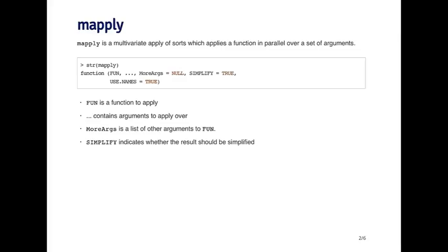mapply is a loop function that is a multivariate version of the lapply and sapply functions that you've seen previously. The idea is that it applies a function in parallel over a set of different arguments. One thing we've noticed about the previous functions — lapply, sapply, tapply — is that they only apply a function over the elements of a single object. So if you're thinking about lapply, the input was a single list, and then the function was applied over the elements of that list.